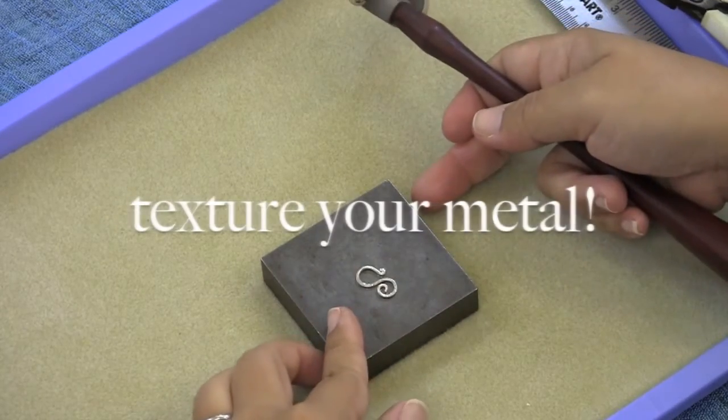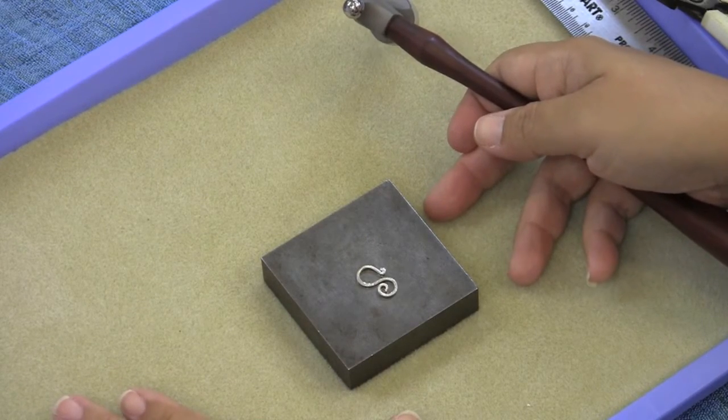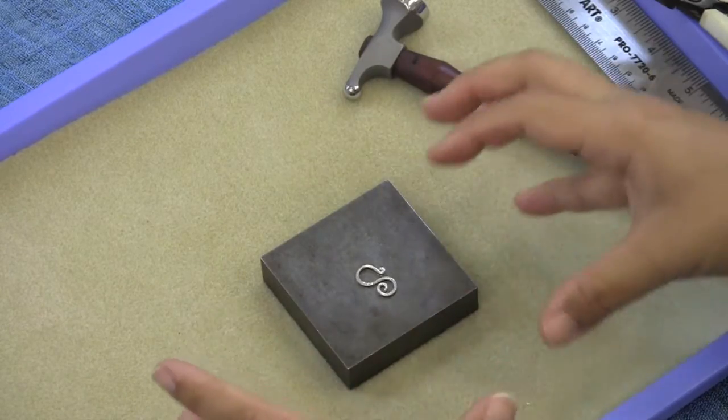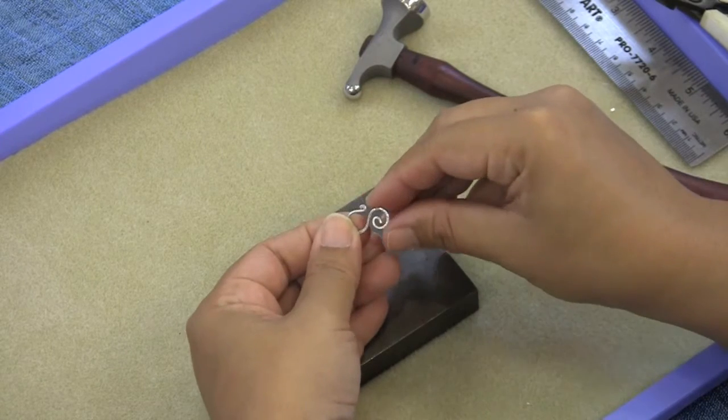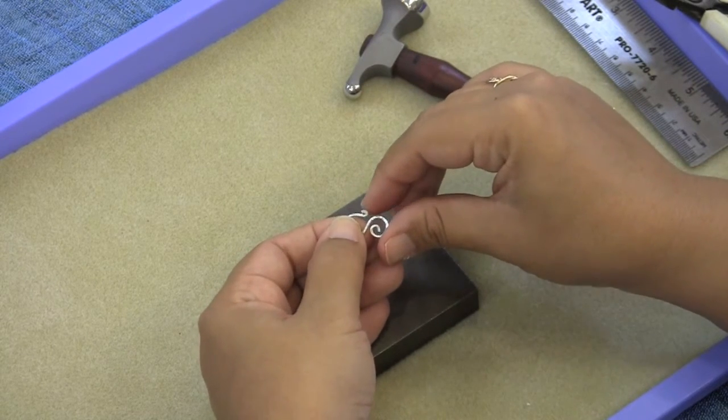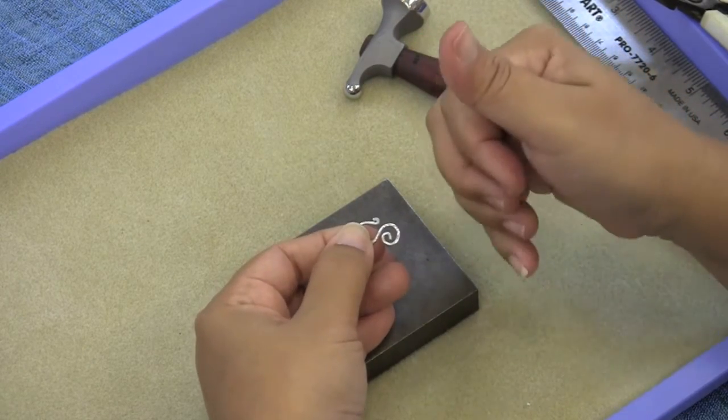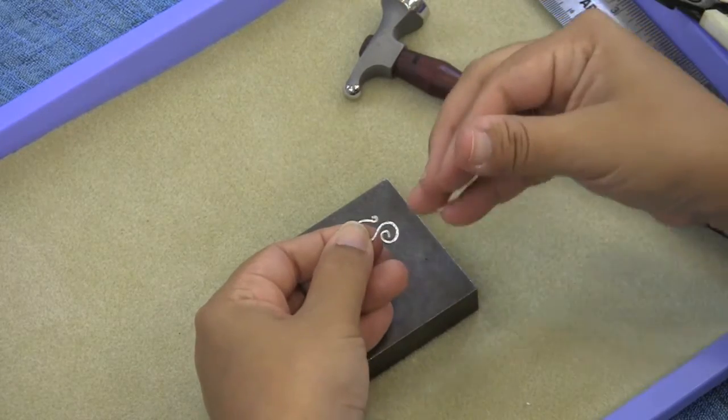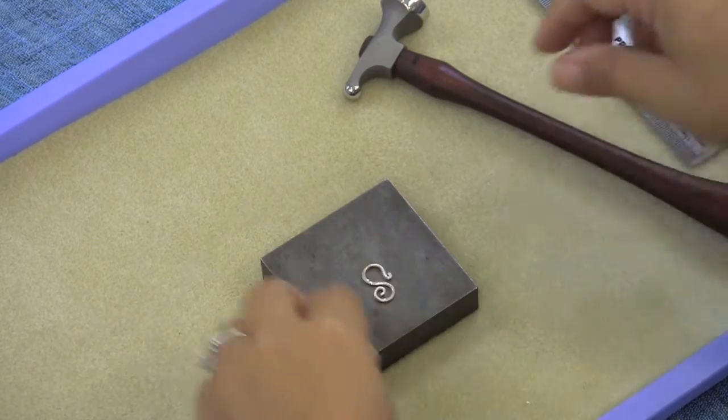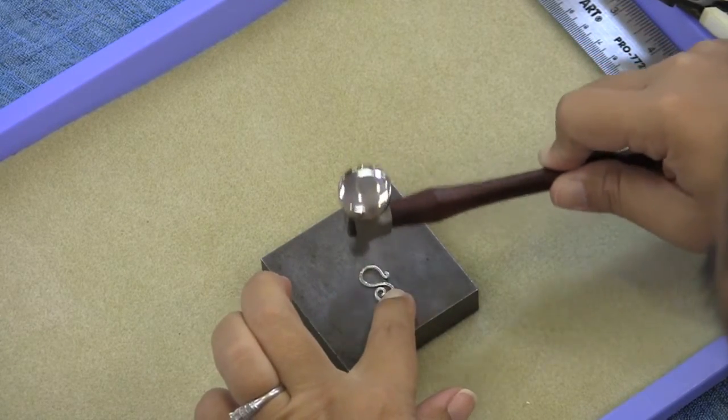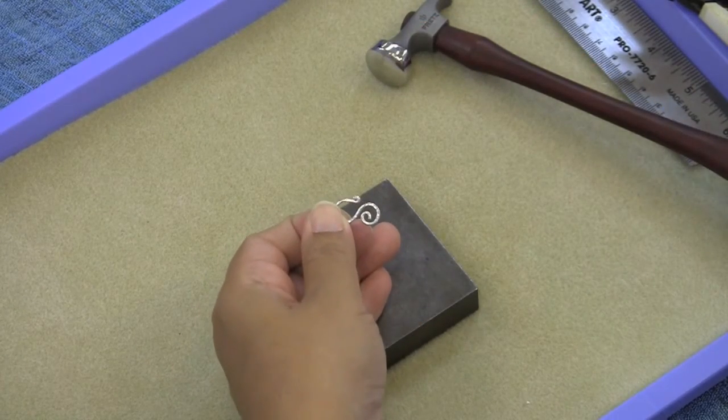I think that texturing is important to a piece because it gives it that really nice handmade look. It adds another element of texture to your piece so it's not just a flat piece of wire. You can also hide or distract from some of the imperfections in your wire working. Say you nicked the wire or gouged it a little bit when you were shaping it, texturing it will kind of mask that a little bit better. And it looks really nice too. I really like the look of textured metal.